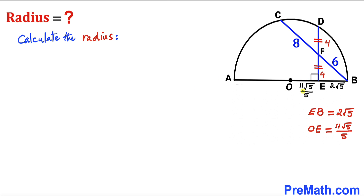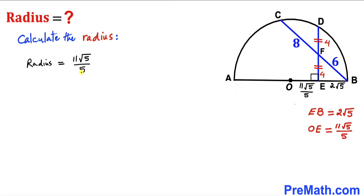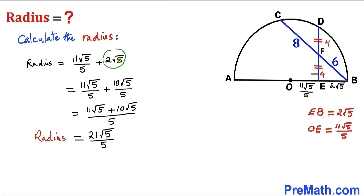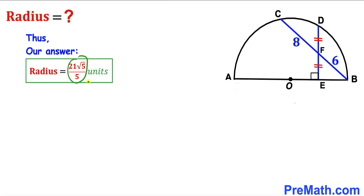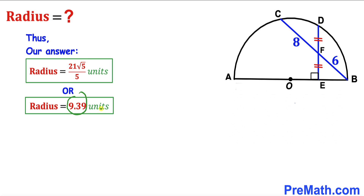Now for the final step: the radius OB equals OE plus EB, which is 11√5/5 plus 2√5. Writing 2√5 as 10√5/5 to get a common denominator, the radius equals 21√5/5 units, which is approximately 9.39 units. That's the radius of this semicircle. Thanks for watching and please don't forget to subscribe for more exciting videos.